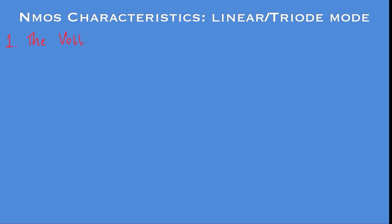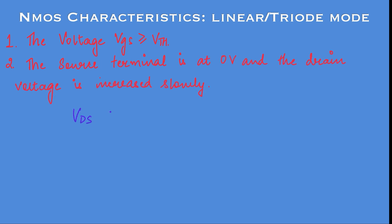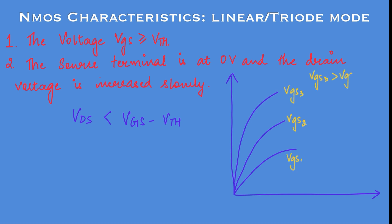Moving on to the next mode, which is the linear or the triode mode. In this mode, the voltage VGS is again greater than threshold, so the channel is there. The source terminal is at 0 and the drain voltage is now increased slowly, so now VDS is not very much less as compared to VGS minus VTH, but it is less than this effective voltage. Looking at the curves, if we plot the curve between ID and the drain-to-source voltage, we notice that the drain current will start to increase as the transistor goes from the cut-off mode where the drain current is 0, to the deep triode — in the deep triode it behaves like a resistor and follows Ohm's law. And in the linear or triode mode, the drain current begins to further increase.